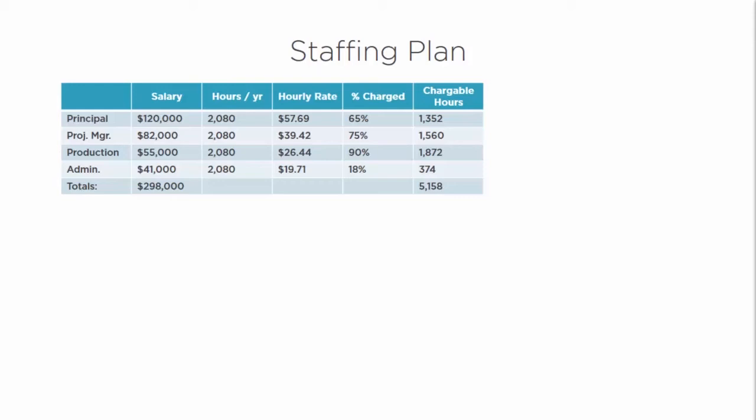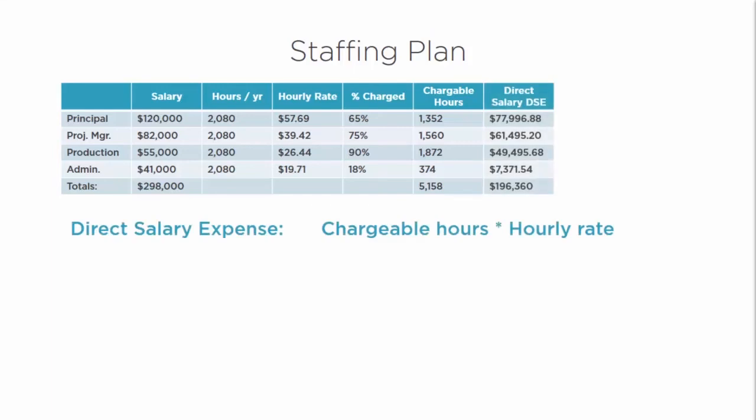Not all of those staffing hours can be realized, so the percent charged is essentially how much time you spend billing out your time to clients. For a principal, only about 1,352 hours can be billed. A production staff member typically has a higher percent charged — around 1,872 hours — while admin staff are billed out for a low percentage, only a couple hundred hours.